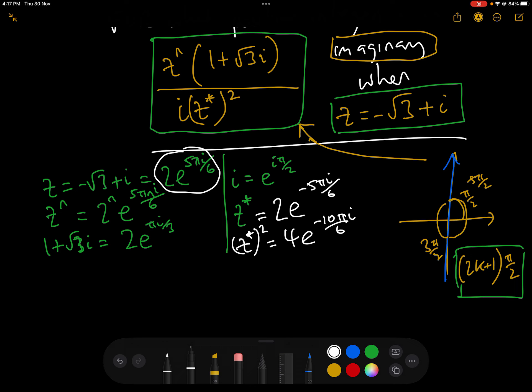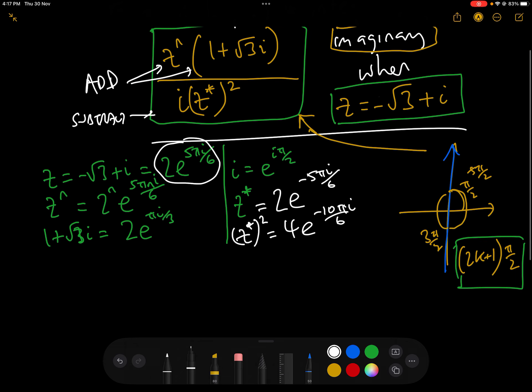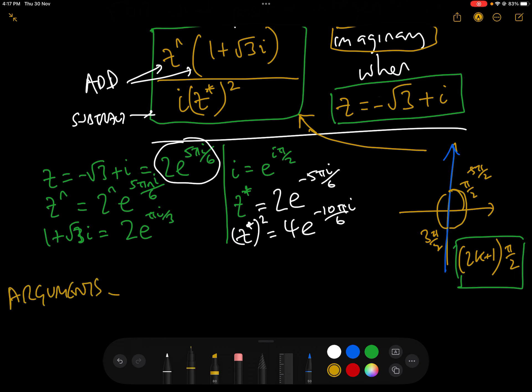Now, all we have to do is compare the arguments. When we multiply complex numbers, like z to the n times 1 plus root 3 i, we add the arguments. And when we divide by complex numbers, we divide by i and z conjugate squared, we subtract the arguments. So this is an equation in the arguments, and we want the arguments to be 2k plus 1 times pi over 2 for the solution to be entirely imaginary.